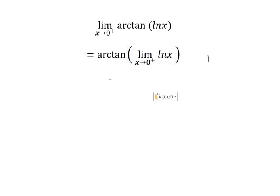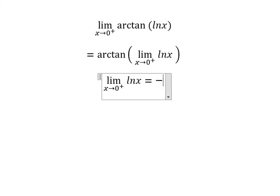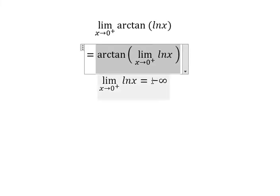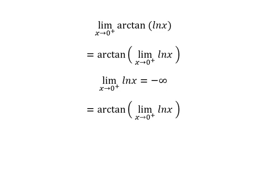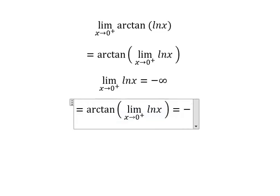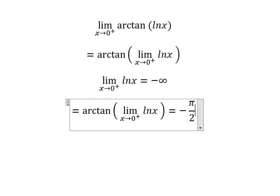When s approaches 0 from the right, we get negative infinity inside. We know that arctangent of negative infinity equals negative π over 2, and this is the final answer.